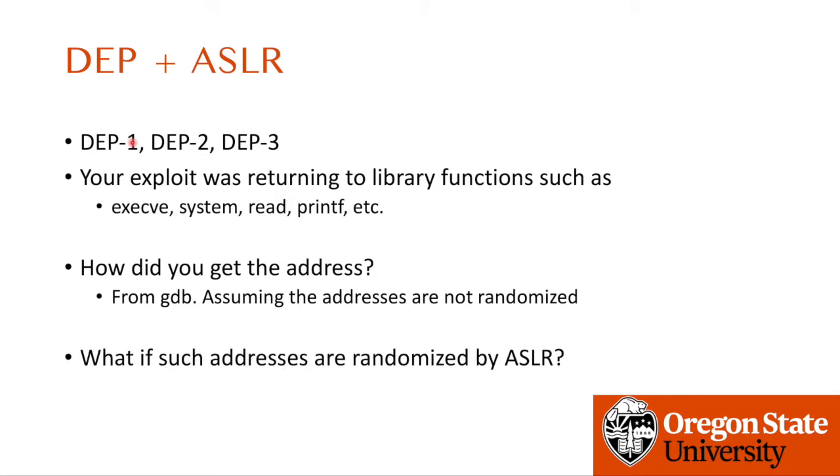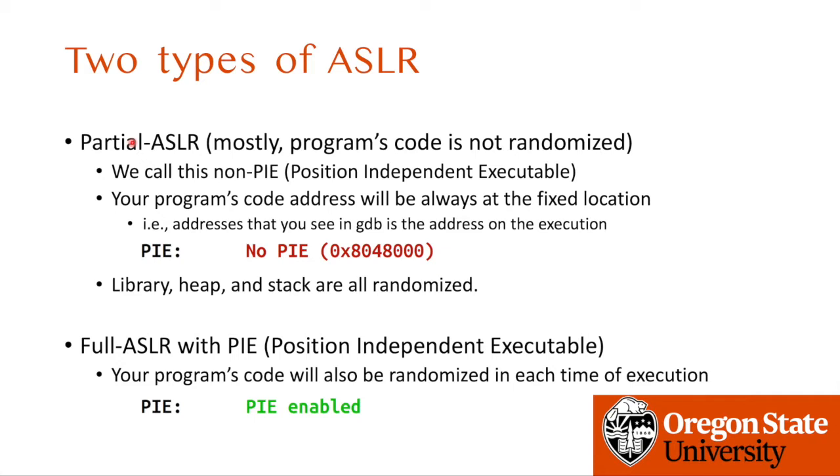We can start with an easier case first. There are two types of ASLR: partial ASLR and full ASLR. Partial ASLR means that some part of the program's memory layout is not randomized. In most cases, the program's code is not randomized at all. We call this case non-PIE.